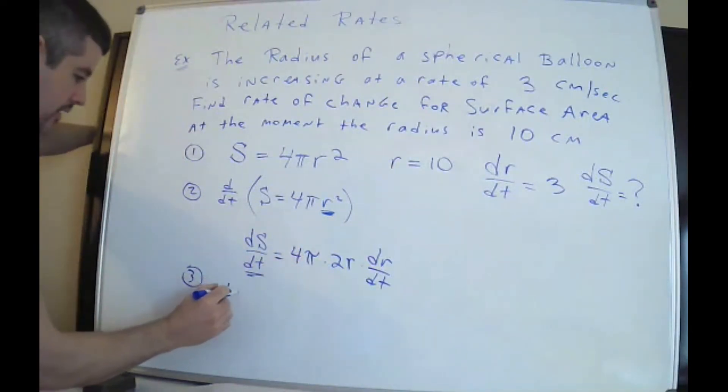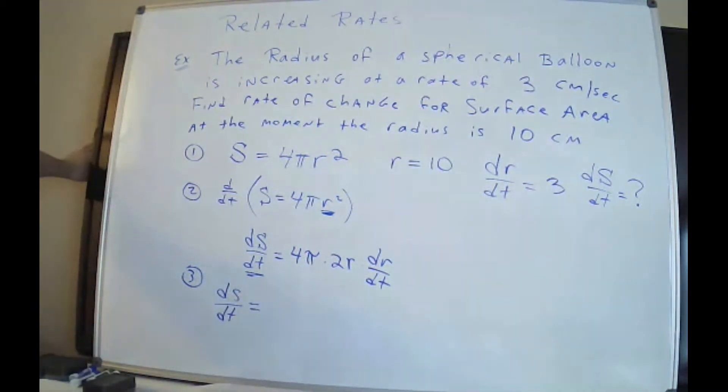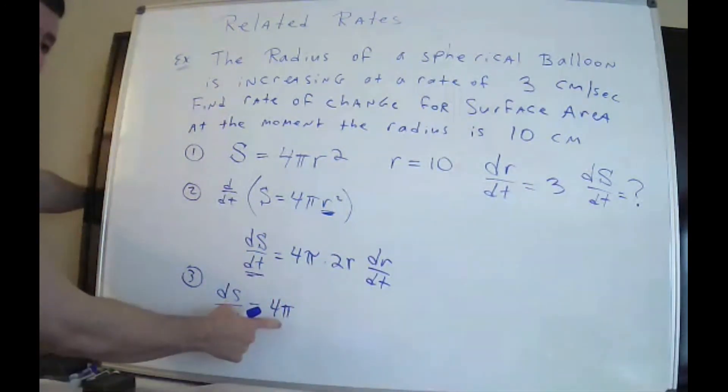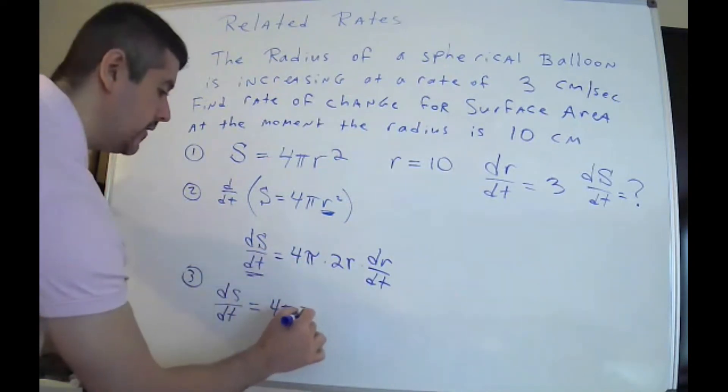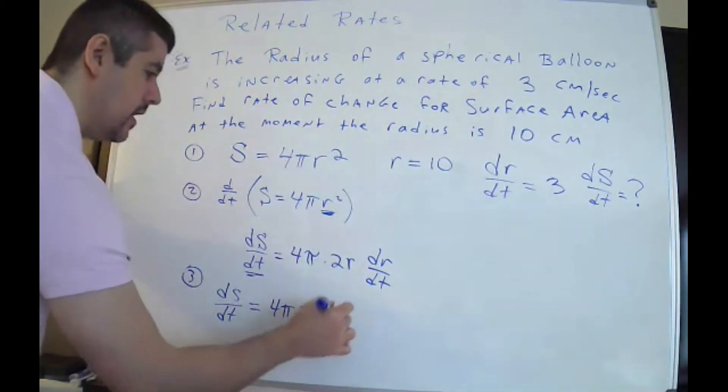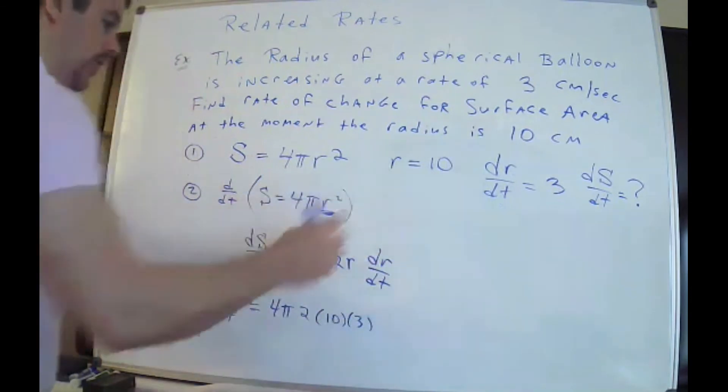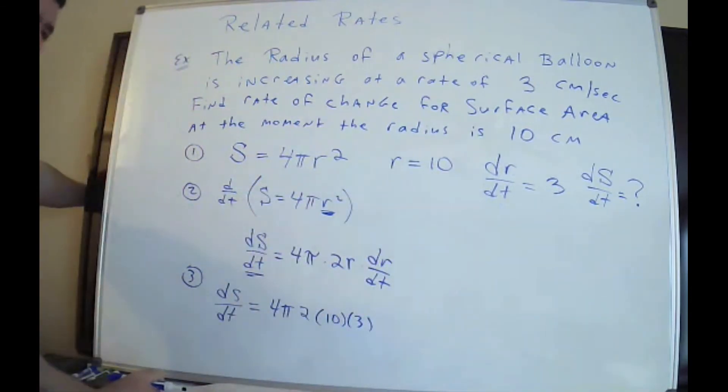So 4π has to stay there. So dS/dt, I'm a little concerned about running at the bottom here. 4π stays. Don't be putting 3.14 here. And don't be putting 180 here. π here is not 180 degrees. I don't have sines and cosines. π here is 3.14. Do not replace the π. Leave the π in your answer. The radius was 10. And dr/dt was 3. That's the rate at which the radius was increasing.